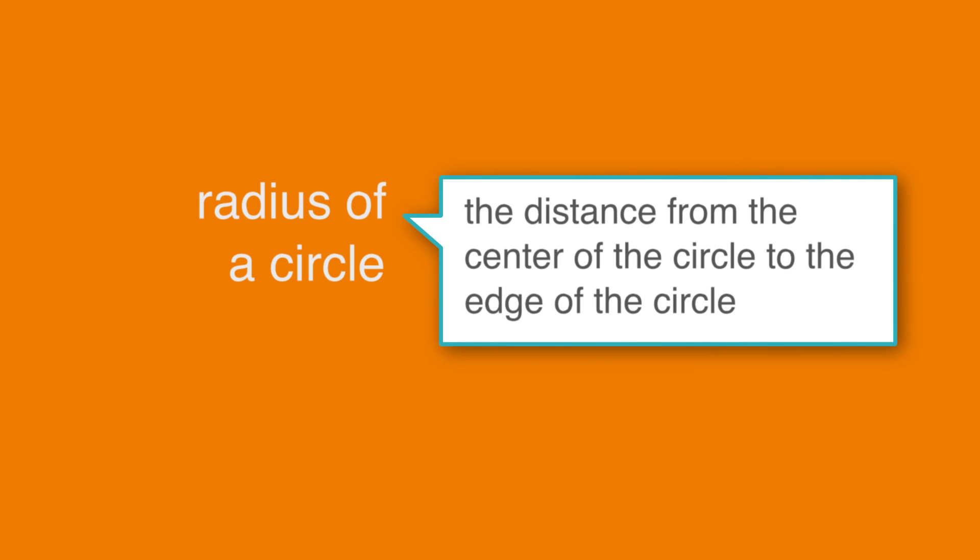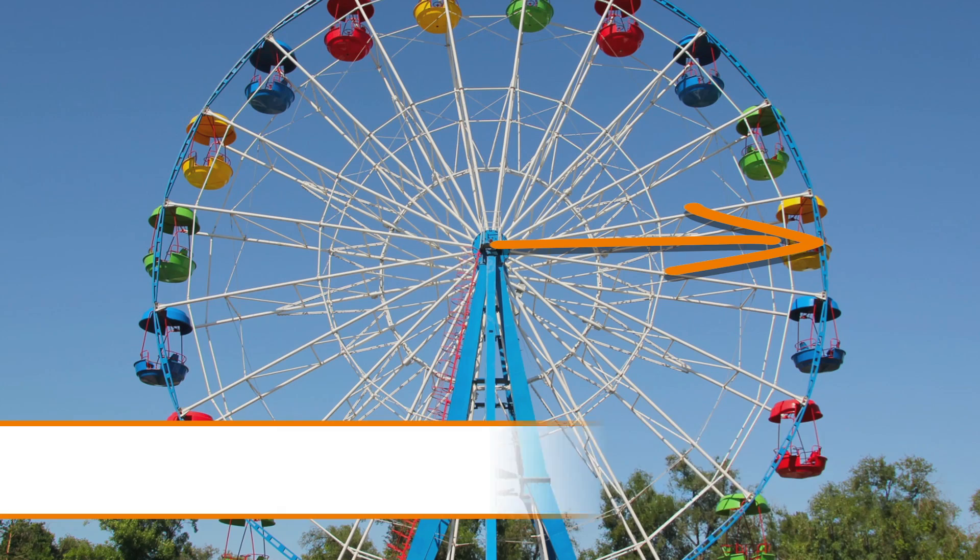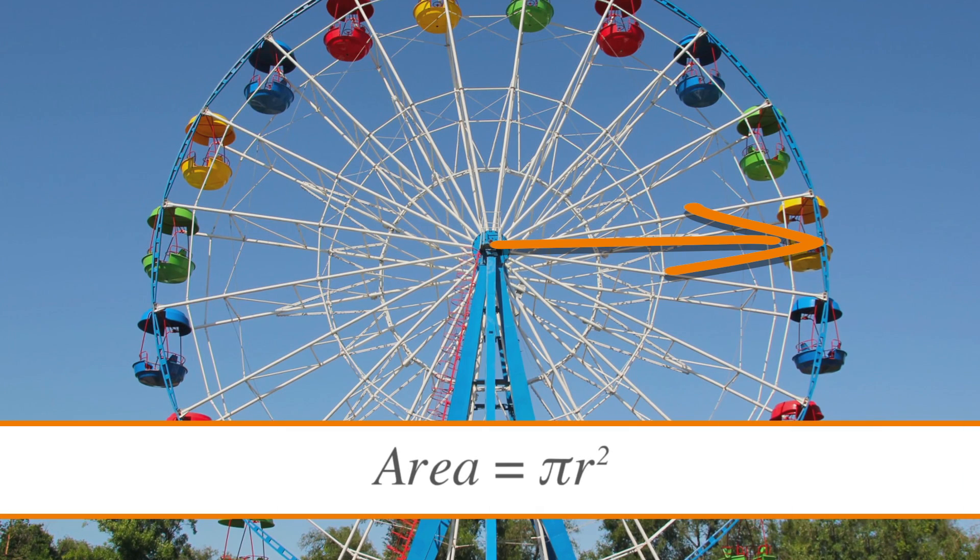Let's start with some basic vocab. The radius of a circle is the distance from the center of the circle to the edge of the circle. To find the area of a circle, we need to use the equation area equals pi times radius squared.